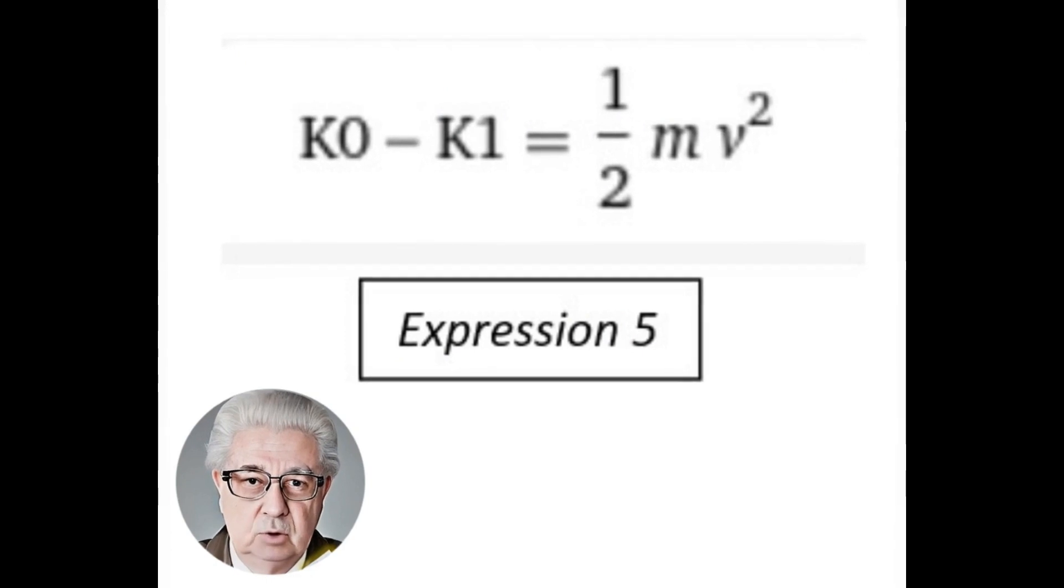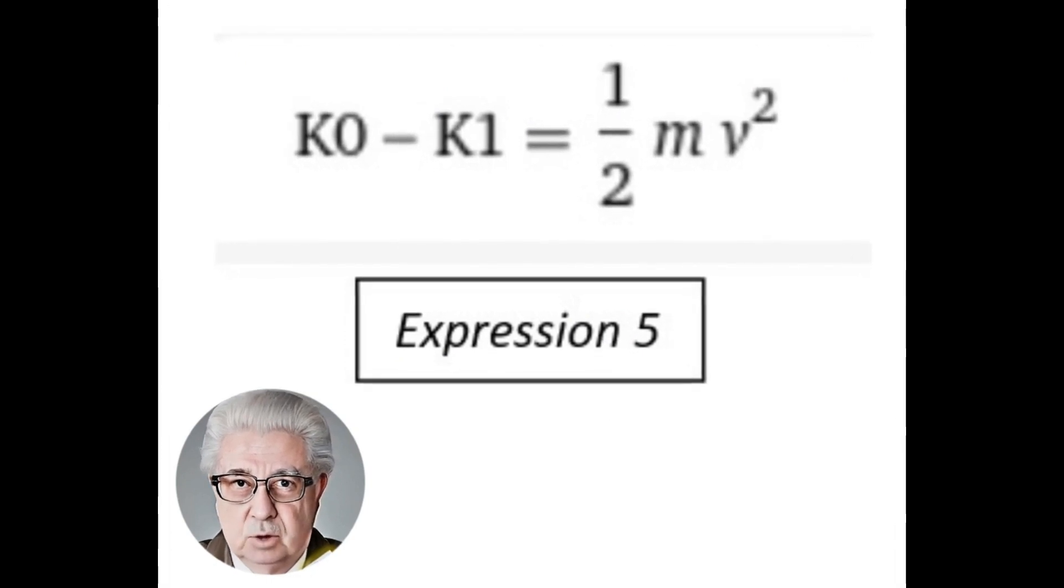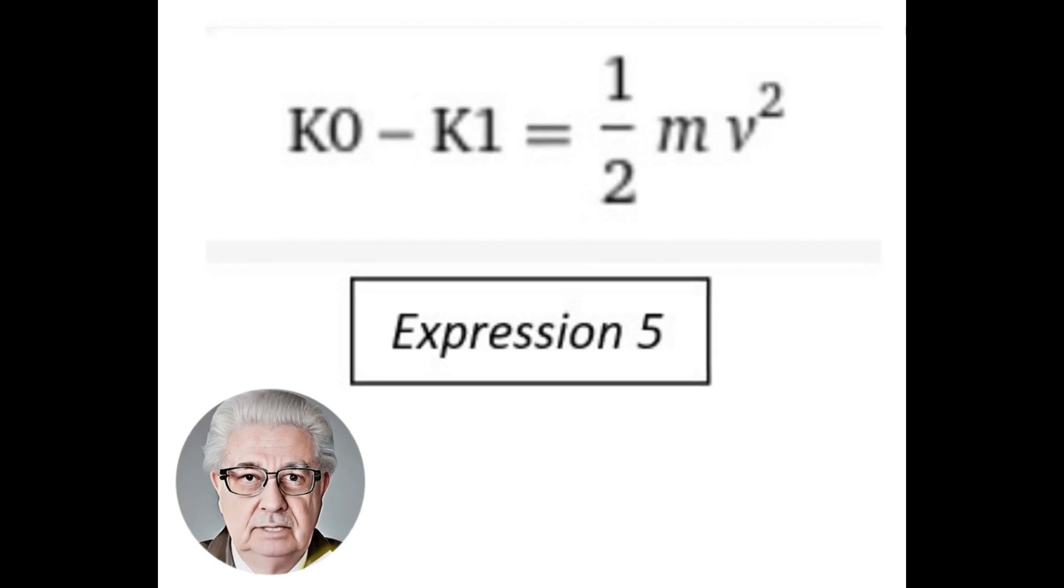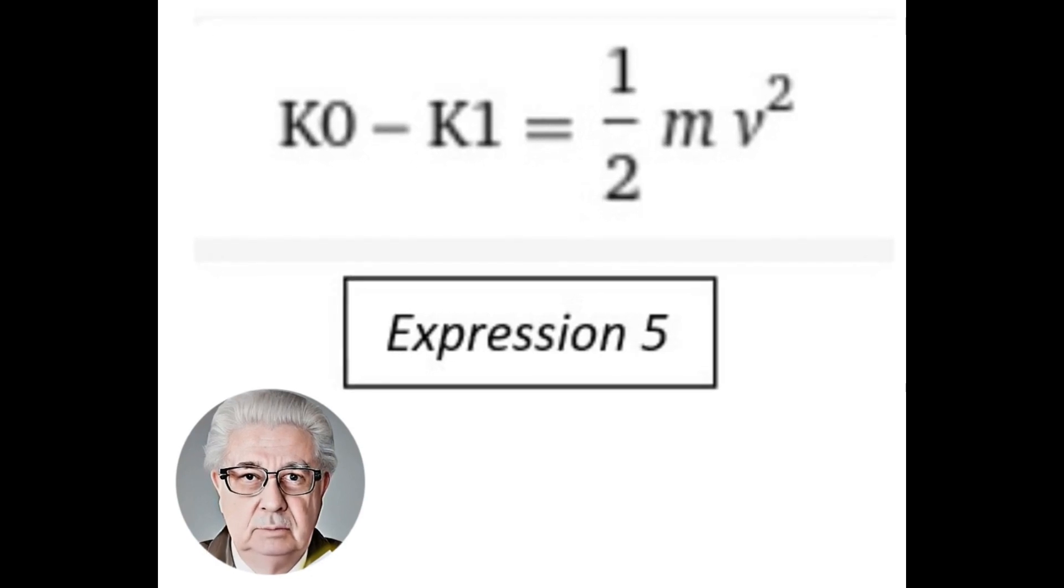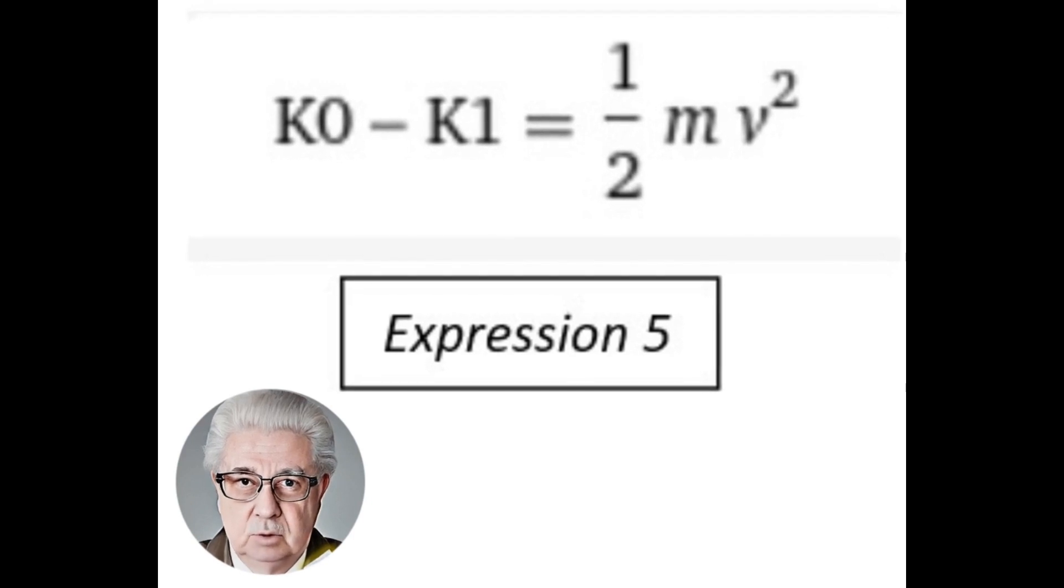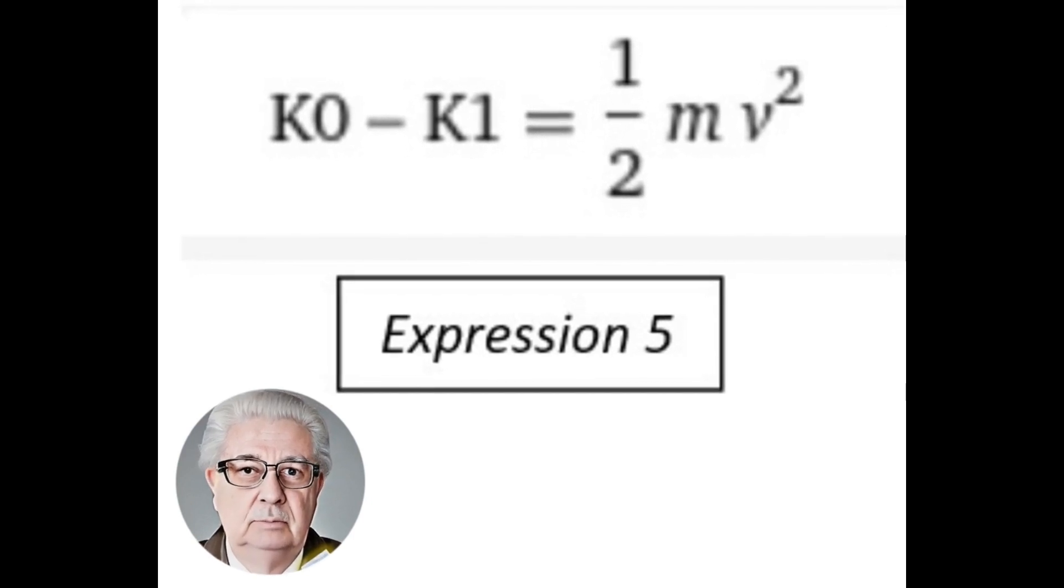So is it also true that the decrease in the kinetic energy of the body would be equivalent to expression 5? Yes, this is a correct way to express the decrease in the kinetic energy of the body after the emission of light, where m is the mass of the body and v is its velocity before the emission of light.